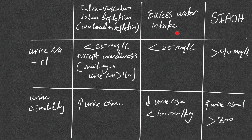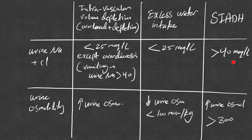In conditions of excess water intake — beer potomania, psychogenic polydipsia, ecstasy use with water drinking, marathon runners — urine sodium and chloride are less than 25 mEq/L, as sodium is preserved, and urine osmolality is very low — less than 100 mOsm/kg — as the body maximally dilutes the urine. In SIADH, urine sodium and chloride are typically above 40 mEq/L and urine osmolality is elevated, usually above 300 mOsm/kg. History and physical exam guide diagnosis in 90% of cases.